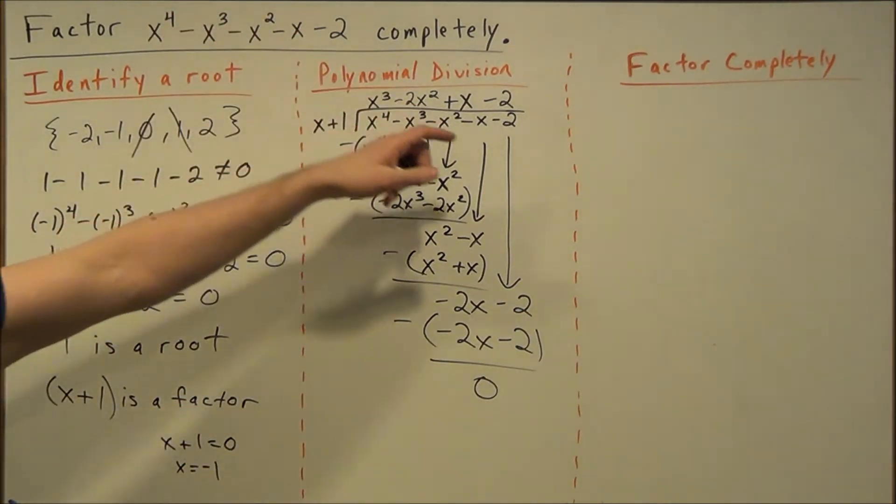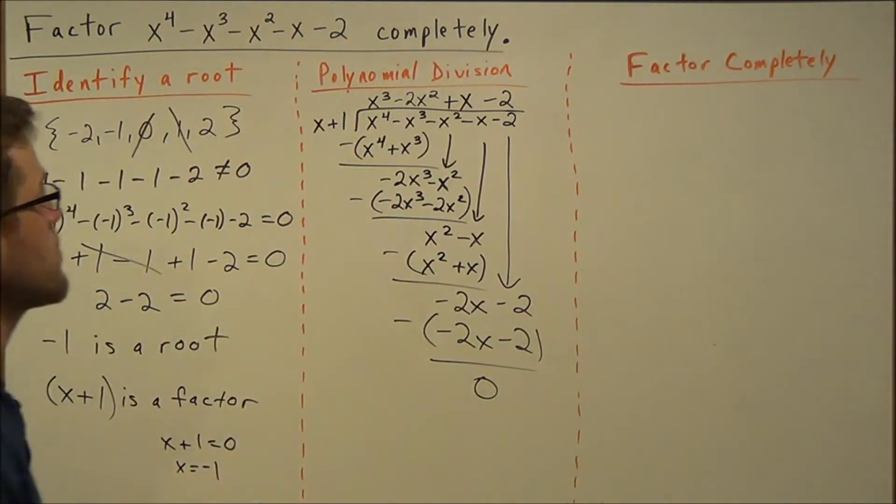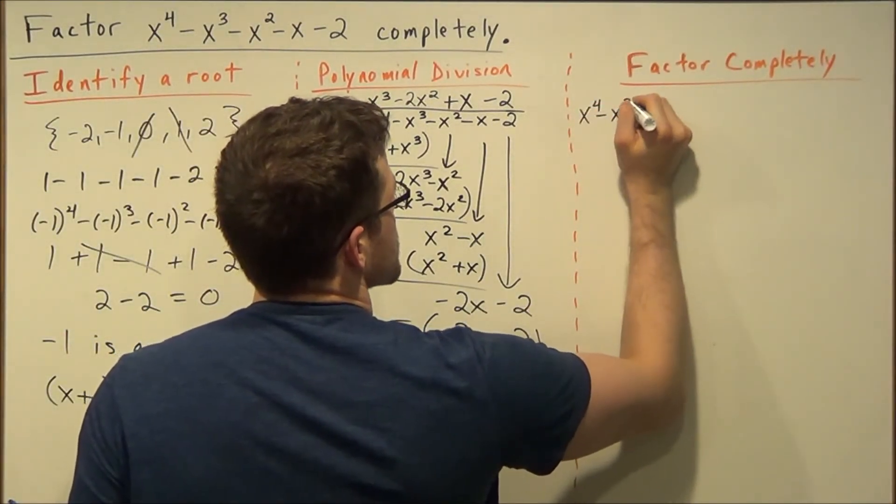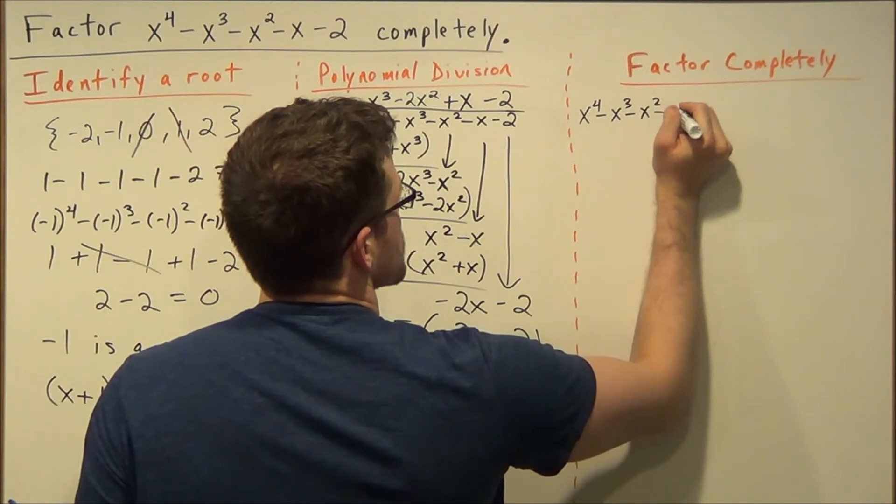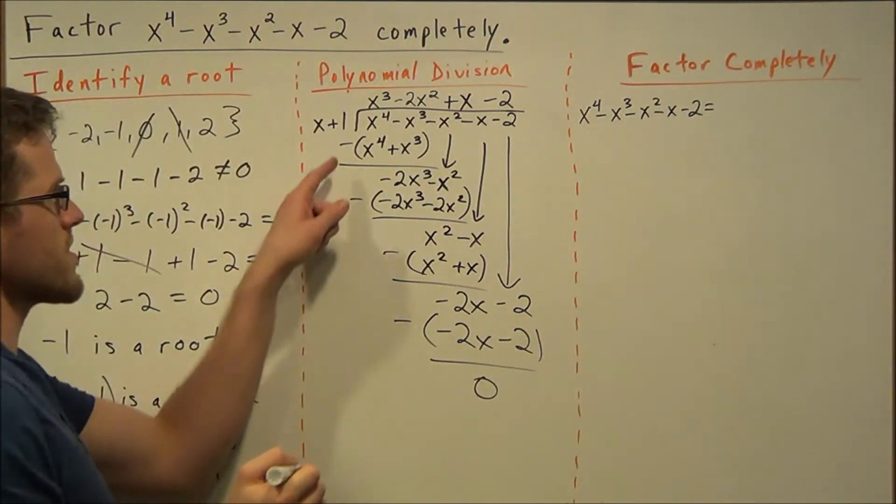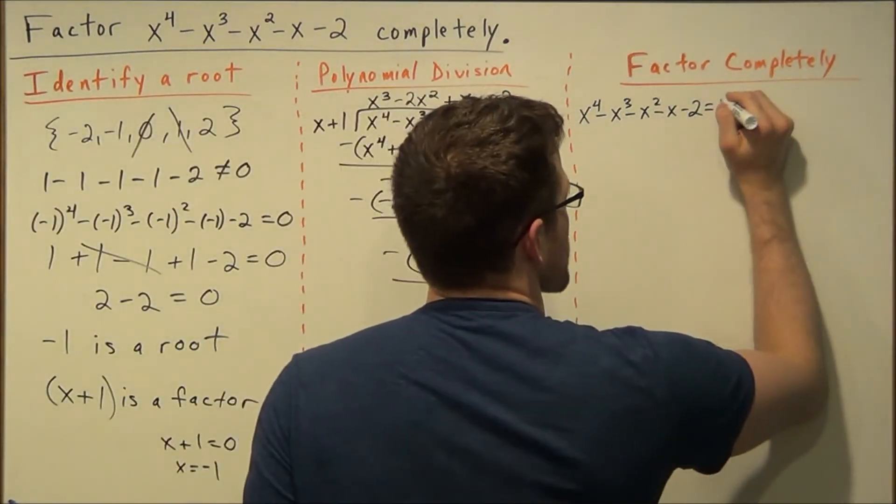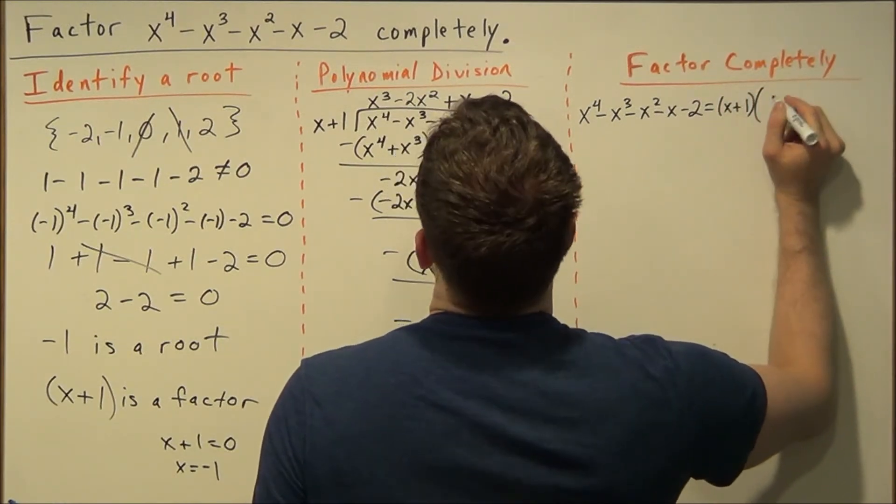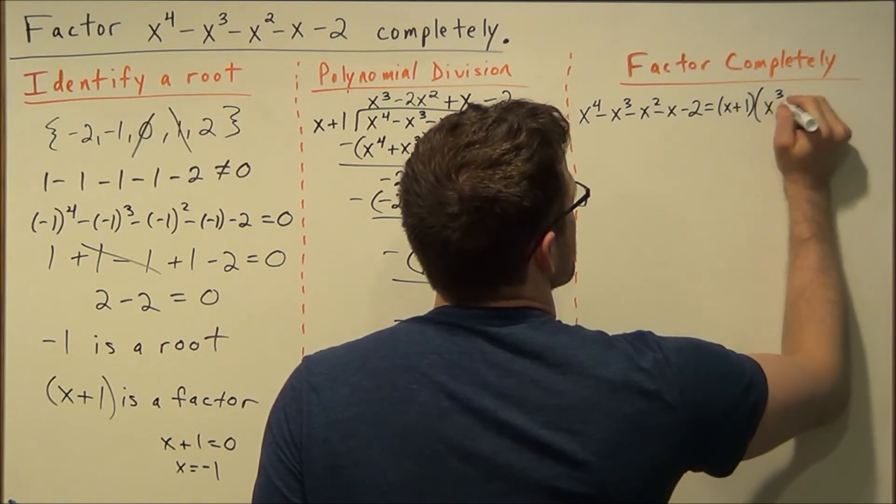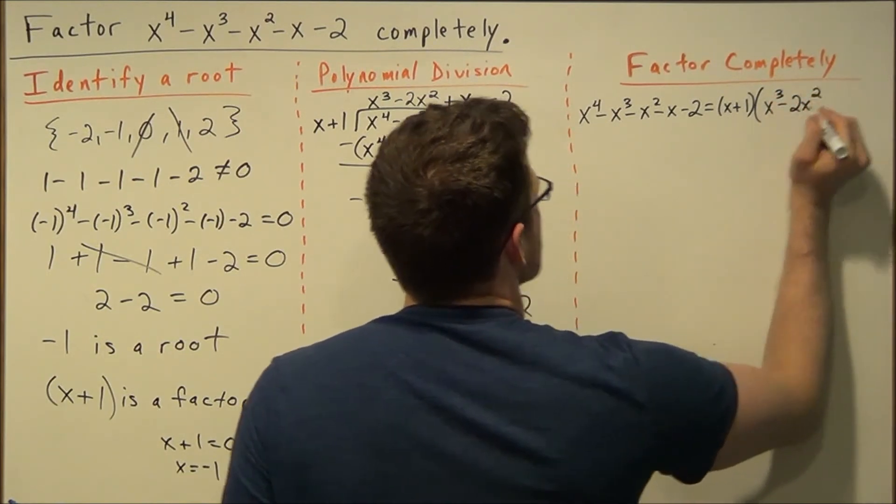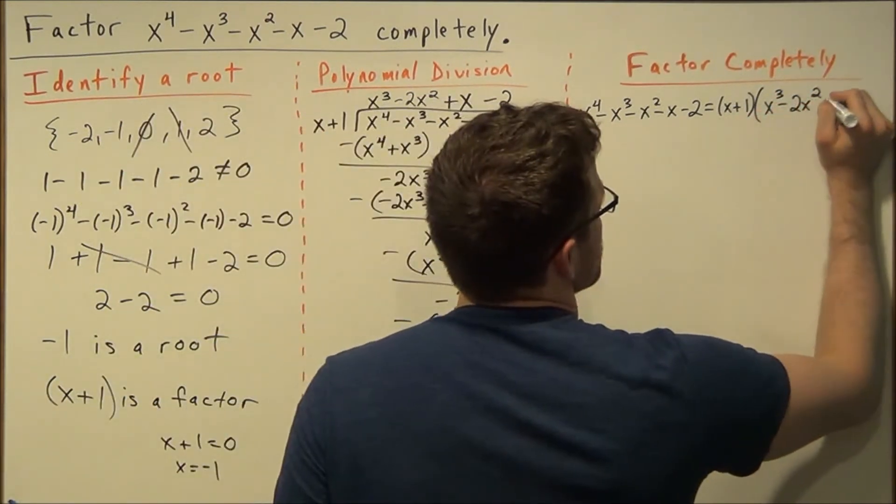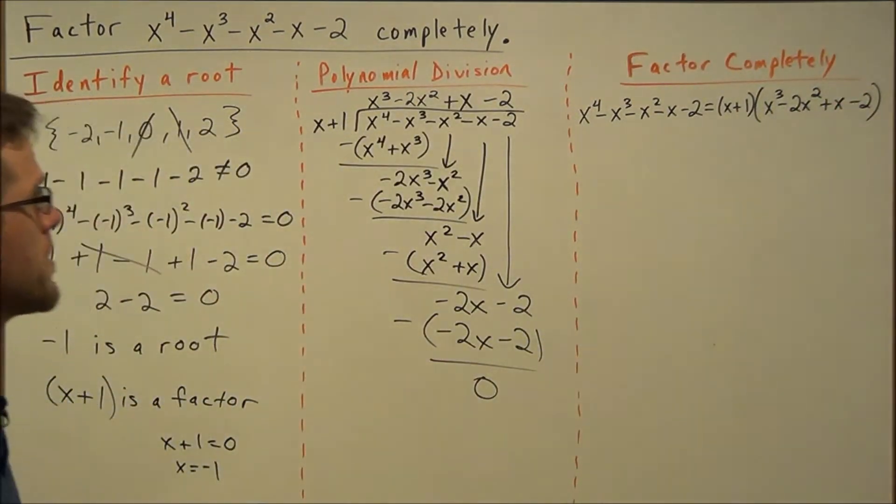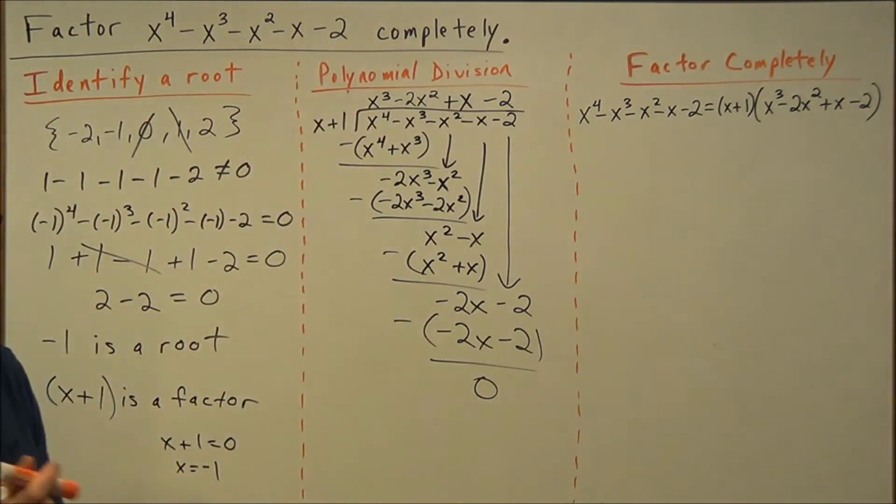So what this allows us to say for the last stage of this problem is that x to the fourth minus x to the third minus x squared minus x minus 2 equals, and we can write this in factored form now. This is x plus 1 times x to the third minus 2x squared plus x minus 2. If we stop here, this is incorrect. We have to factor this completely.